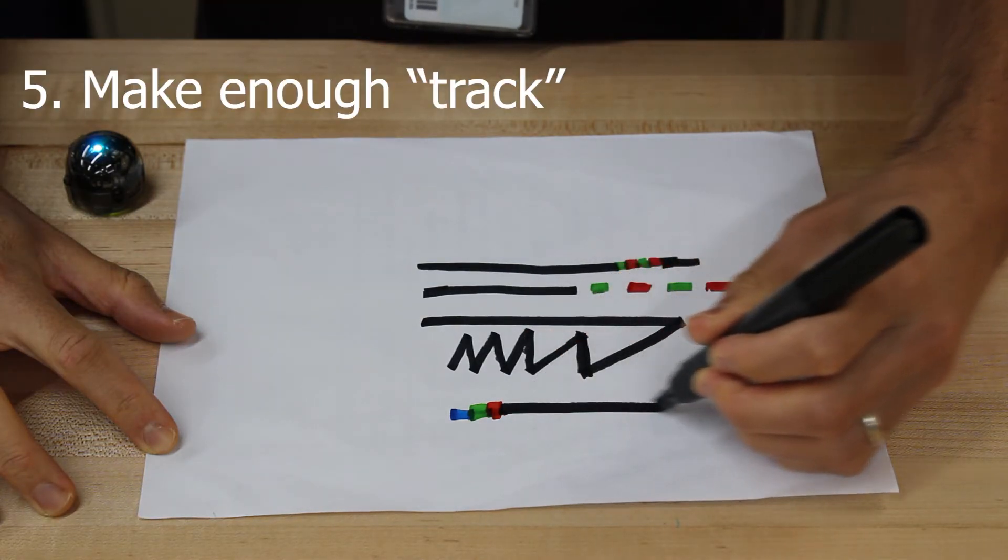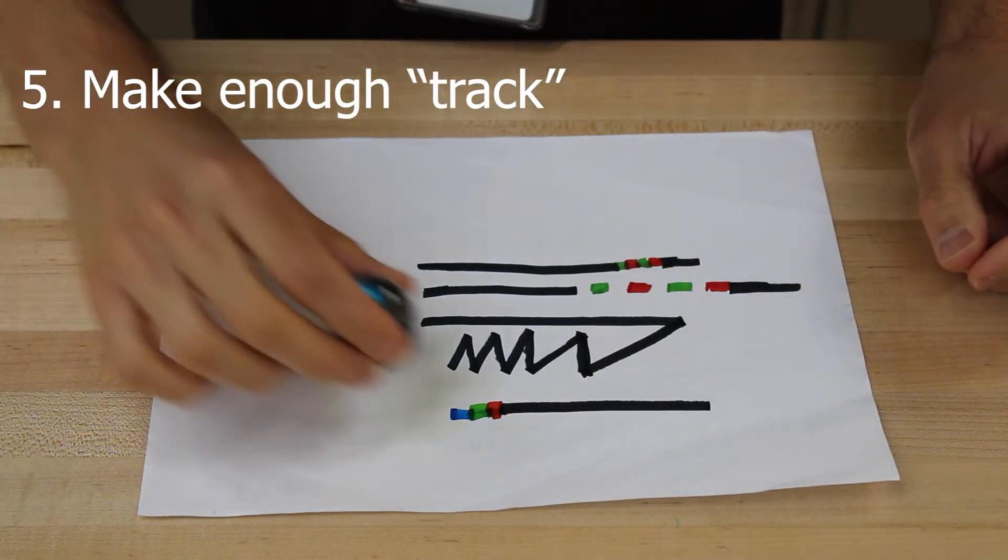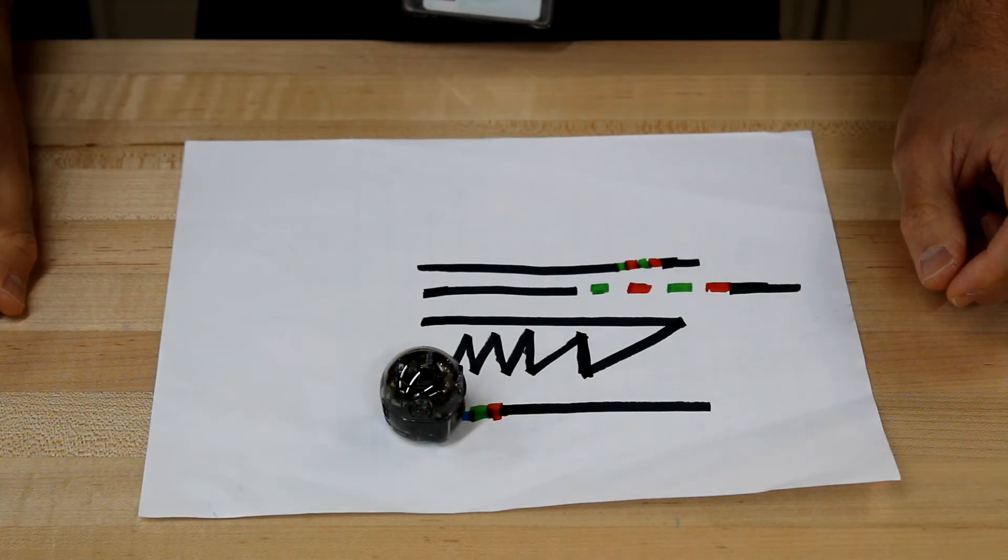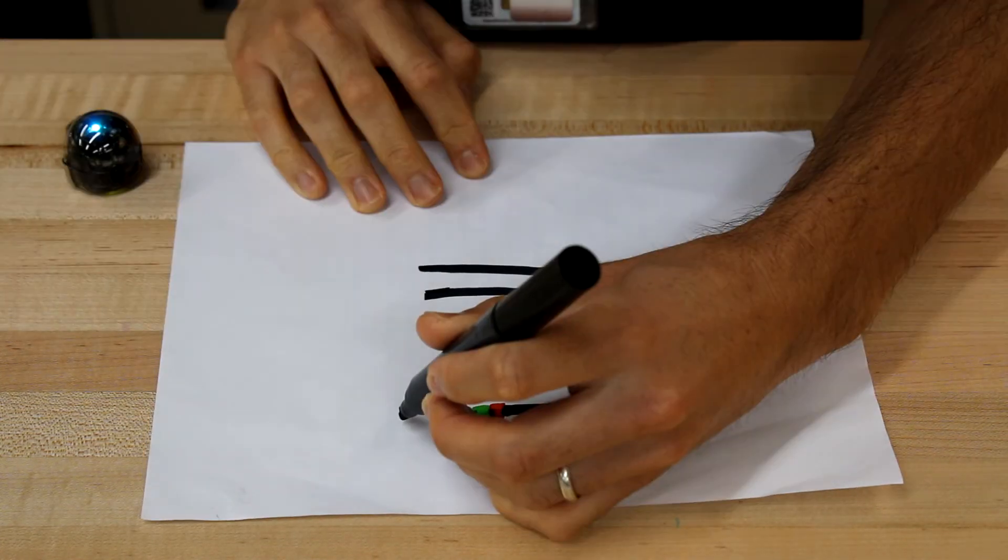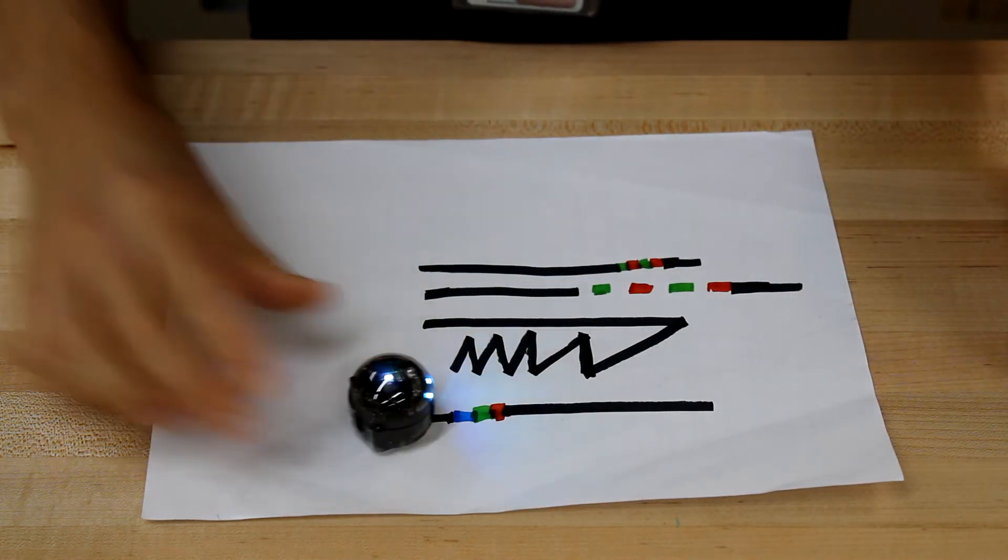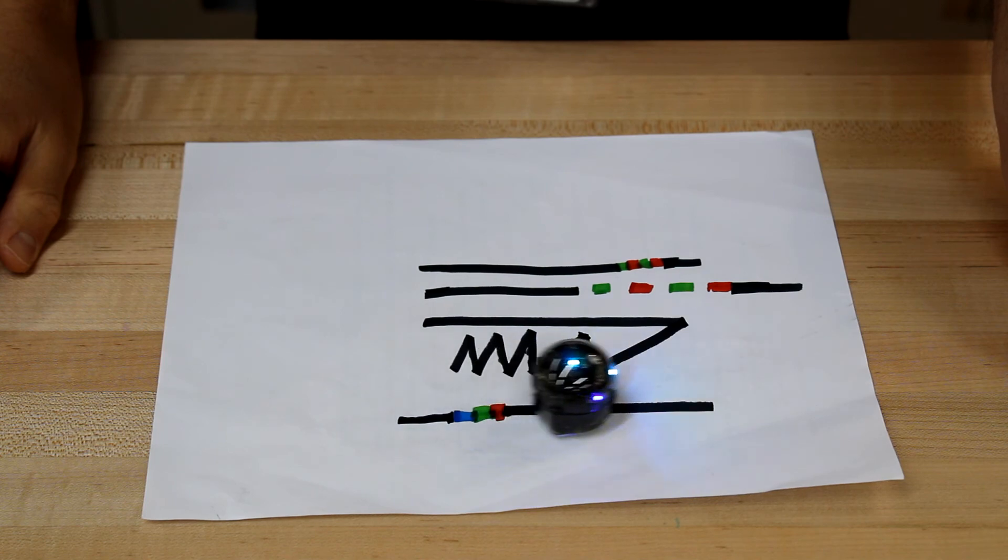Number 5. Make sure there's enough track. Add color codes in between black lines instead of at the start of them. Evo sometimes doesn't know what to do if it tries to read a color code without first following a black line, so try to give Evo a little room to get itself up to speed. That's better.